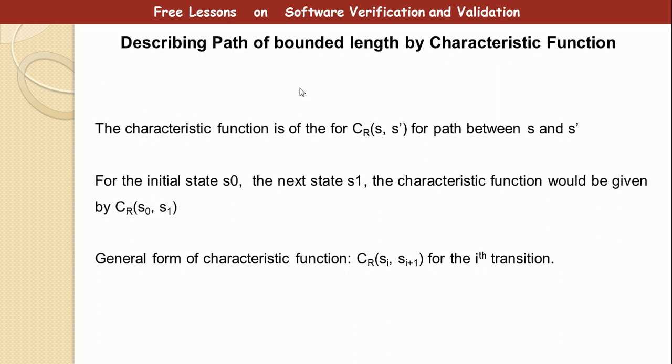Let's now take some examples. This is characteristic function definition CR for s to s' for paths between s and s'. From the initial state to the next state, s0 to s1, the characteristic function will be CR(s0, s1). Meaning that the general form of the characteristic function is CR(si, si+1) for the ith transition.